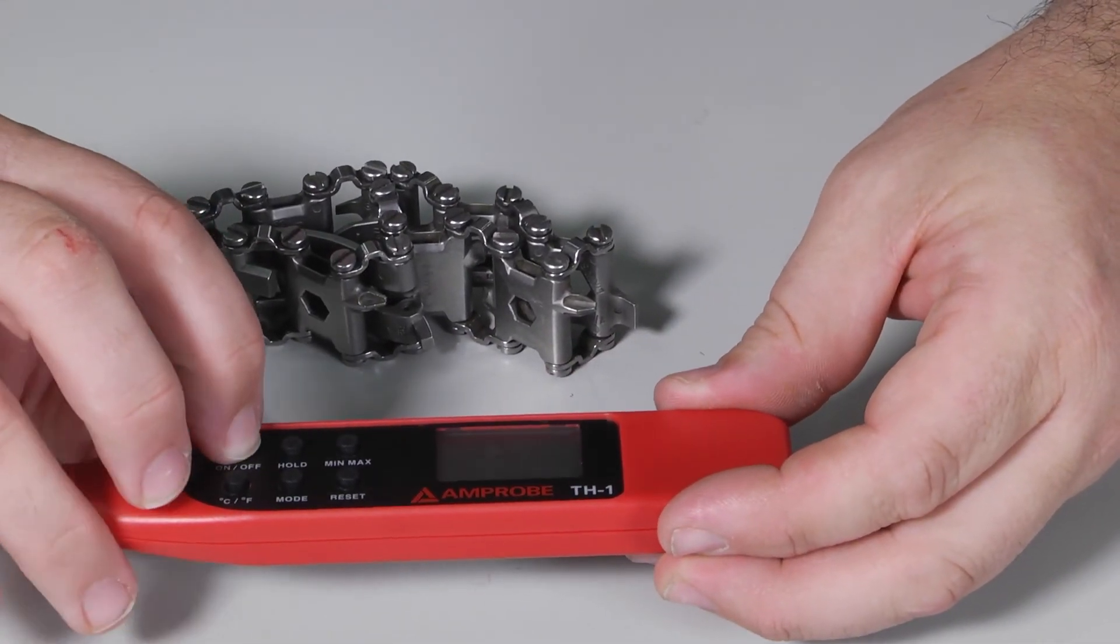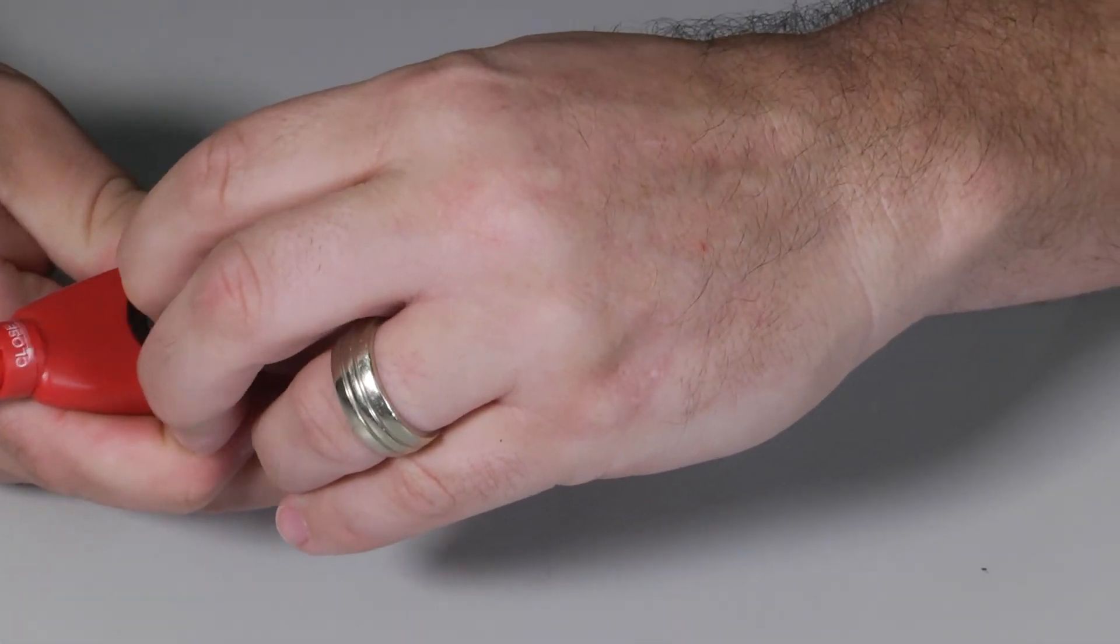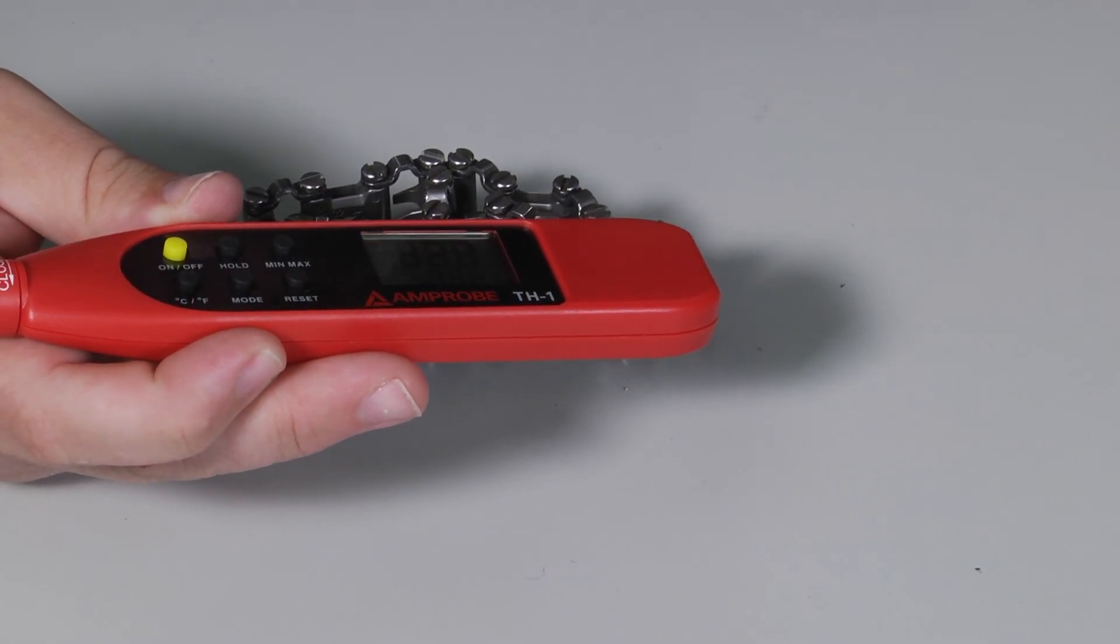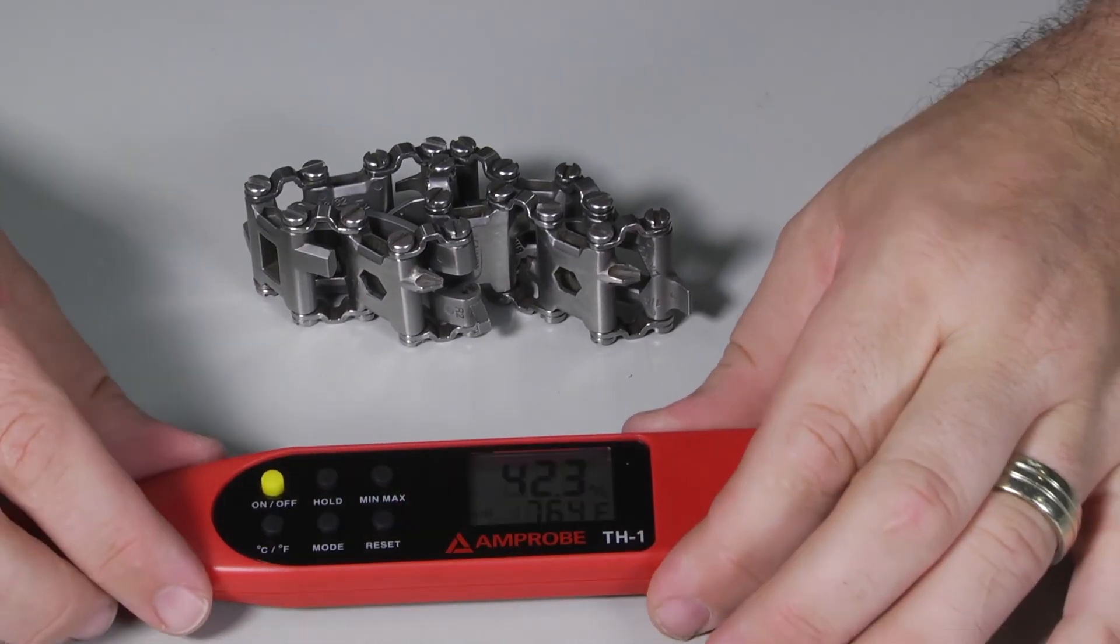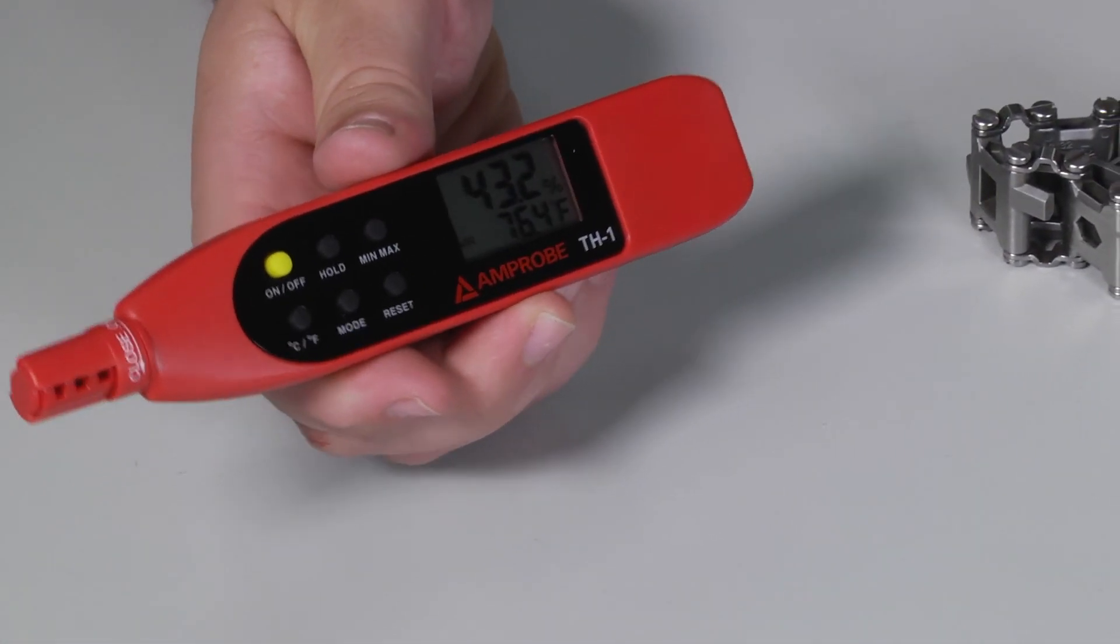So let's see what it can measure. First off, we'll just power it up, turn it on. Let's go ahead and get this little protective covering off of it so we can get a good display. And right now, what we're reading is relative humidity and the air temperature.